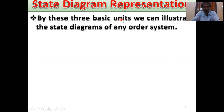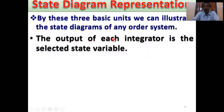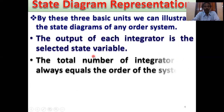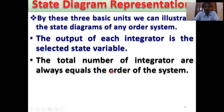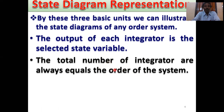By these three basic units we can illustrate the state diagram of any order of the system. The output of each integrator is the selected state variable. The total number of integrators are always equal to the order of the system. This is a very important point — for an nth order system, choose n integrators. For example, for a third order system, choose three integrators. This is the basic principle.